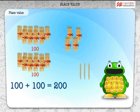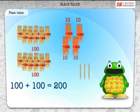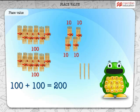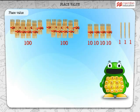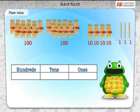That makes 200. Count the remaining tens — there are four tens. And then count the ones — there are three ones. Now, let us write this number by putting it in the correct place value under hundreds, tens and ones.